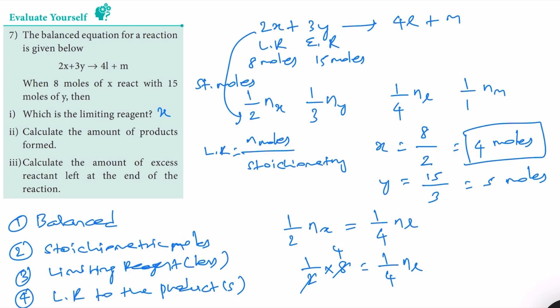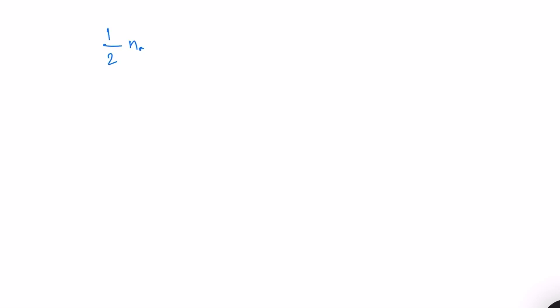Cross-multiplying gives N_L = 16 moles. Likewise for product M: one-half times N_X equals N_M, so one-half times 8 equals 4 moles of M. We have now identified the amount of both products: L is 16 moles and M is 4 moles.